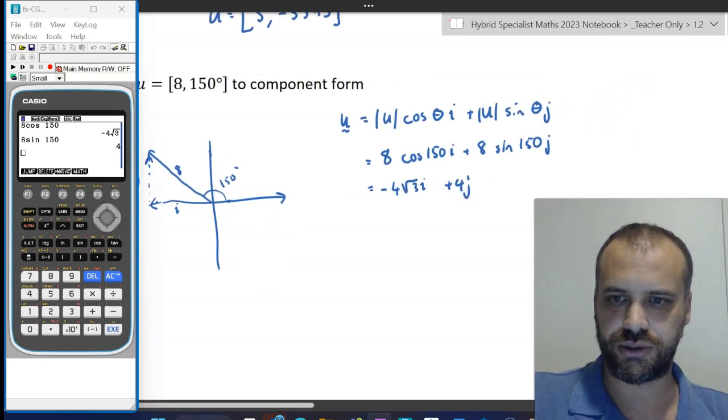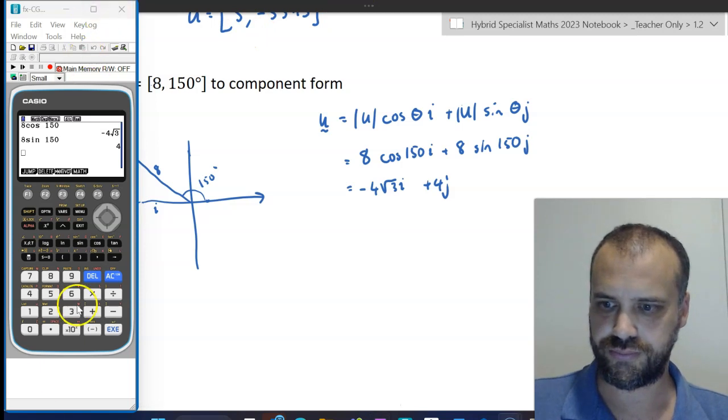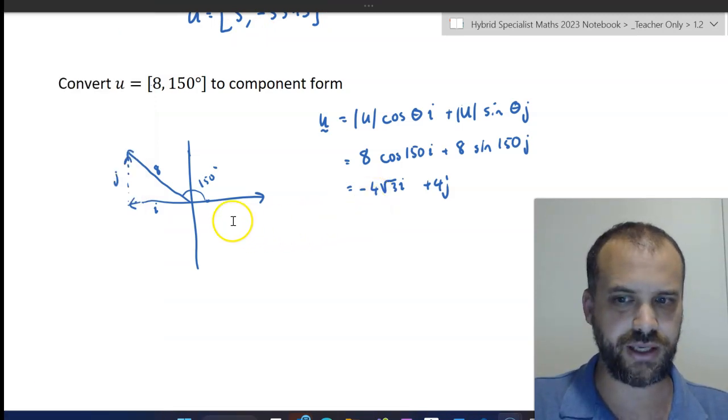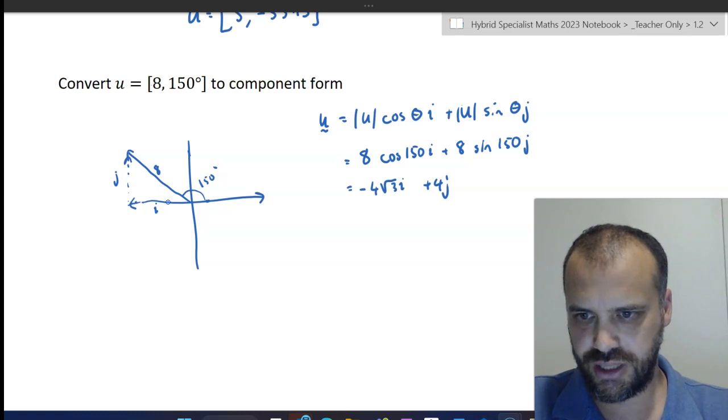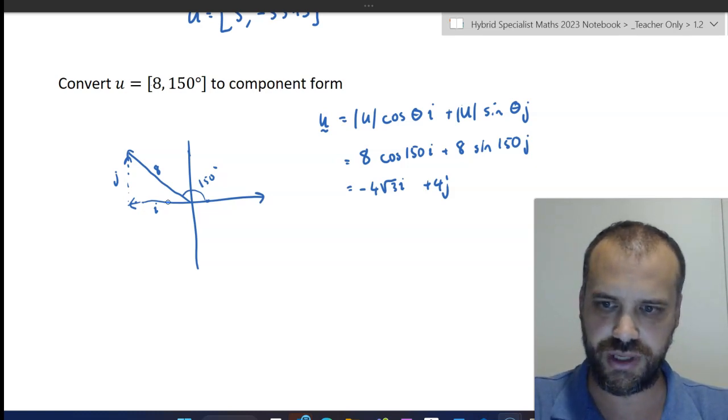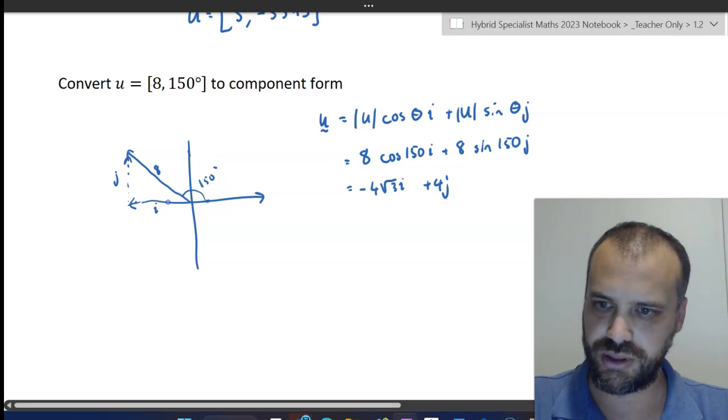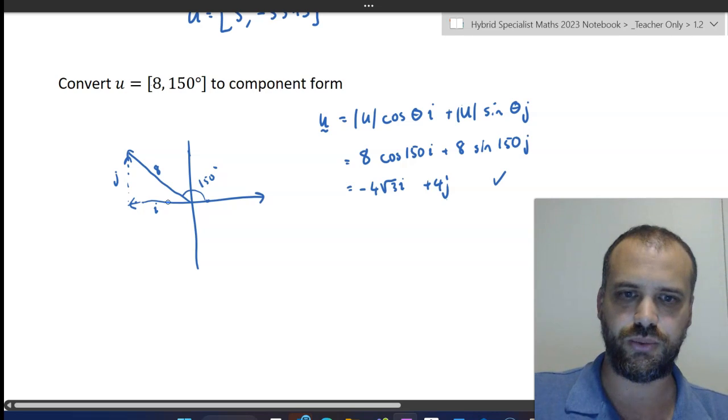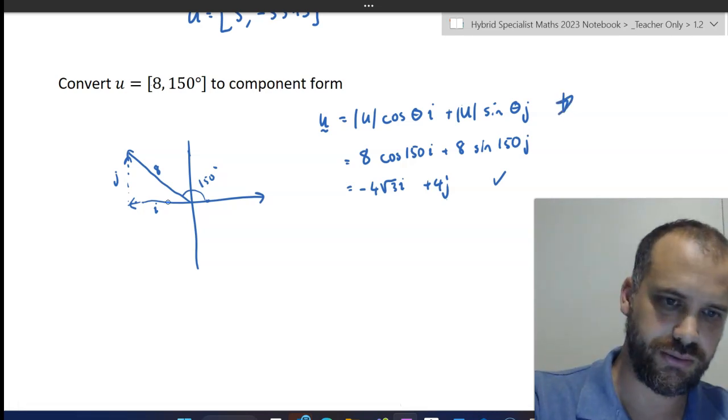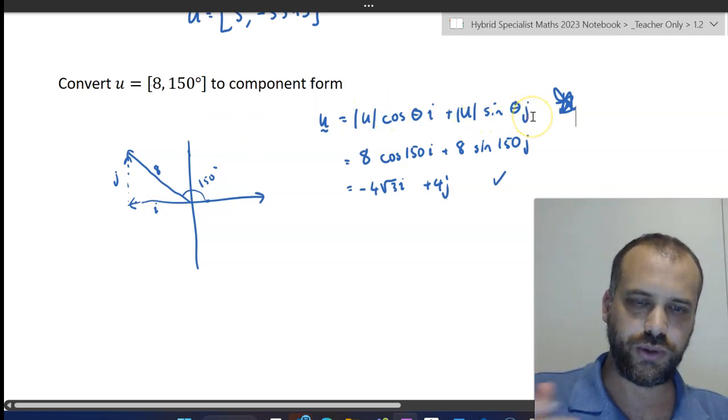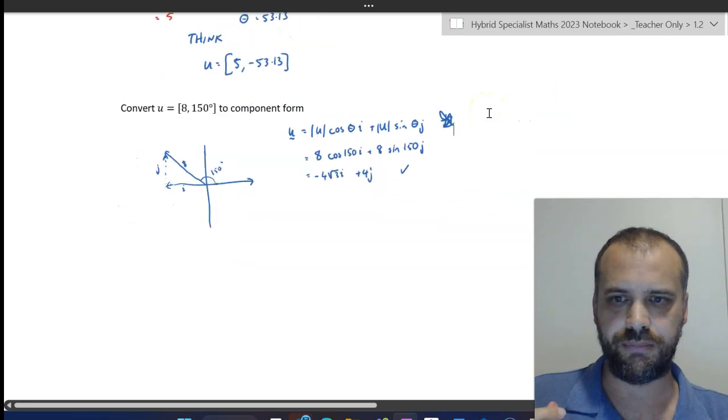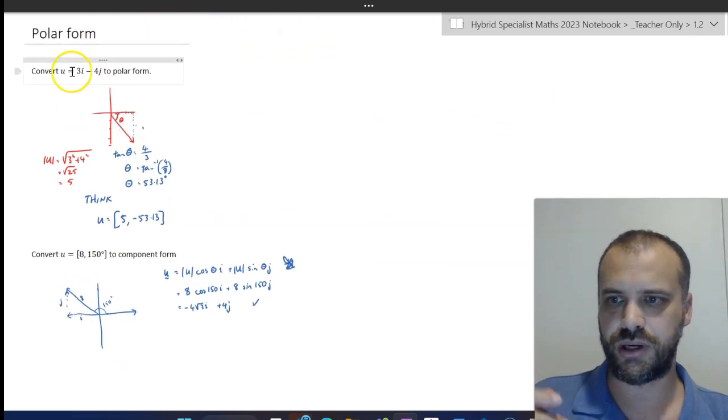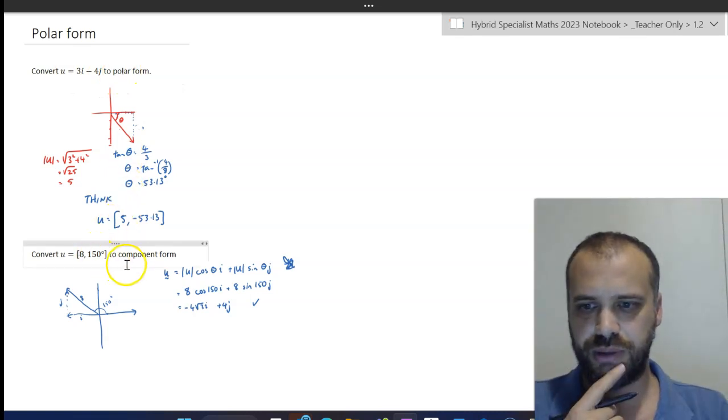Important now to double check your work. Looking back at your picture and making sure that it makes sense. So when I look at this picture, I see a negative i component, the vector's going that way. So that makes sense, negative 4 root 3, and I see a positive j component. That also makes sense. So I'm happy with what I've done there. Now, this formula right here, so important. You might want to take a moment and think, how does that formula exist? It's all about trigonometry. SOHCAHTOA, you can think about how that works. But that is converting from component form to polar form and from polar form back to component form.